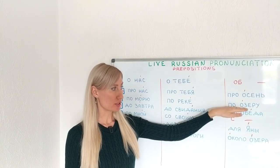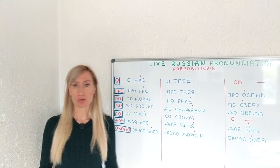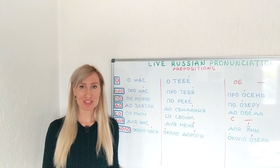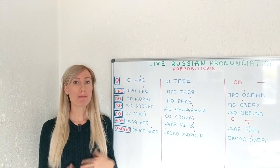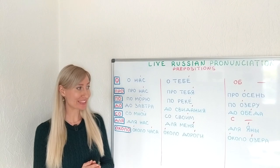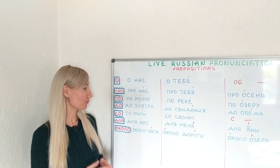If the word starts with О, it would sound like this: ПА ОЗЕРУ — on the lake.